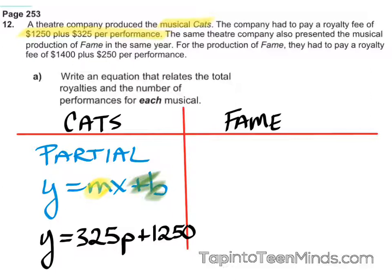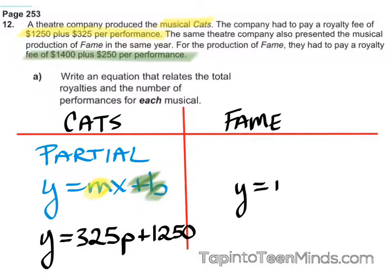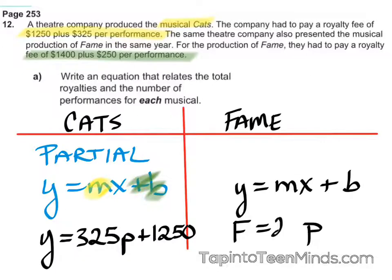Who's got my second equation for Fame? Let's look at Fame — here's our royalty fee and our performance fee. What does it look like, folks? I substituted F for Fame equals 250P plus 1,400. Can you say your variables again? I used F for Fame because it's different, and P for number of performances. Perfect. So it's 250P for $250 per performance, and then your initial fee of $1,400. Nicely done.